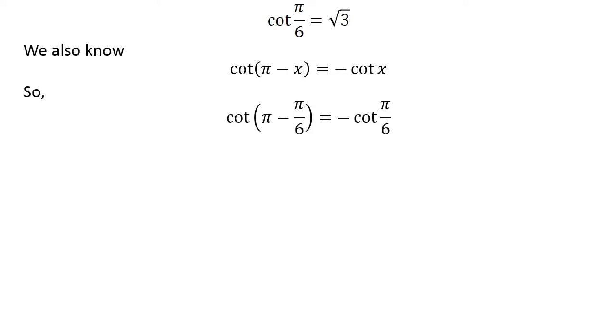So, cotangent of pi minus pi over 6 equals minus cotangent of pi over 6. As pi minus pi over 6 equals 5 pi over 6, cotangent of 5 pi over 6 equals minus square root of 3.